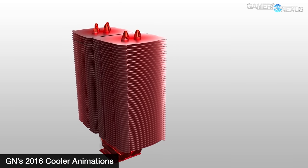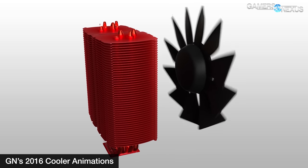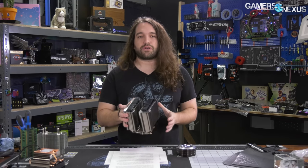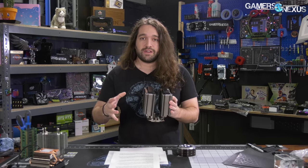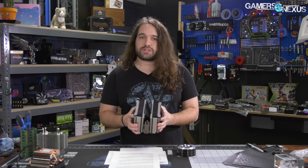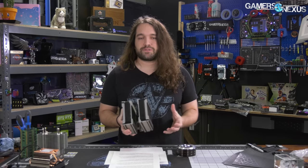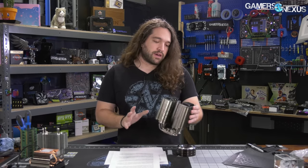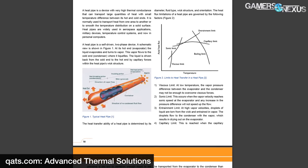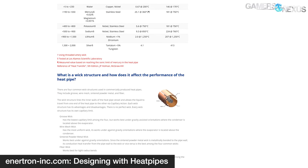Heat pipes are built to oppose gravity, which means for the most part we shouldn't really see an impact from gravity in a computer hardware application, especially because a fan is responsible for the bulk of cooling capacity. Once you get into space or applications without fans, things do change. Heat pipes can be affected by gravity and even the angle at which they're installed — there are research papers on that, which we'll link in the accompanying article.